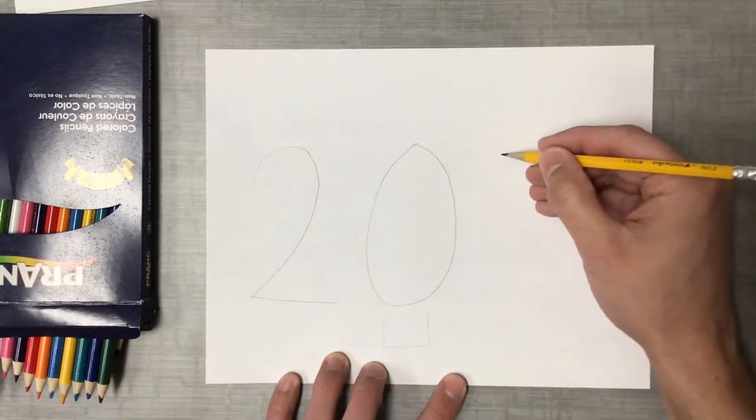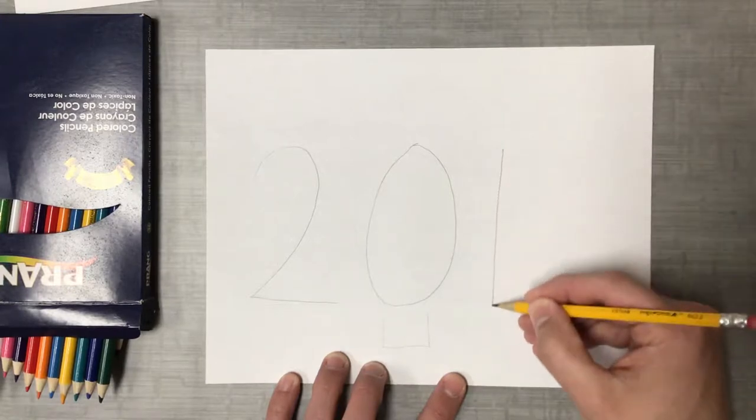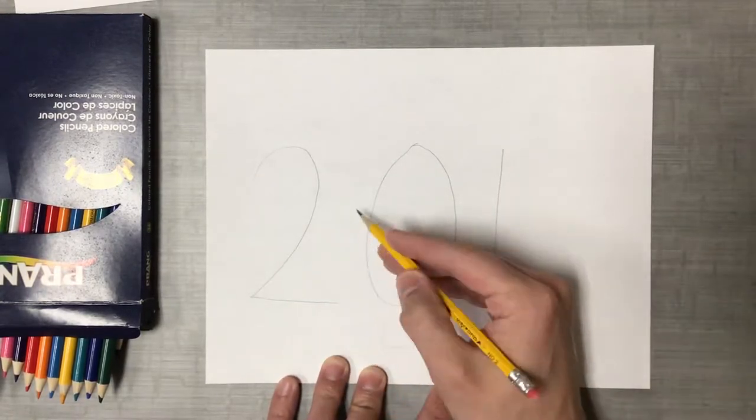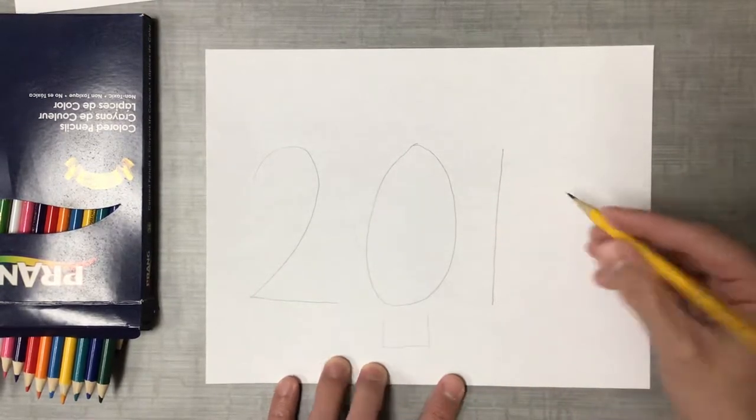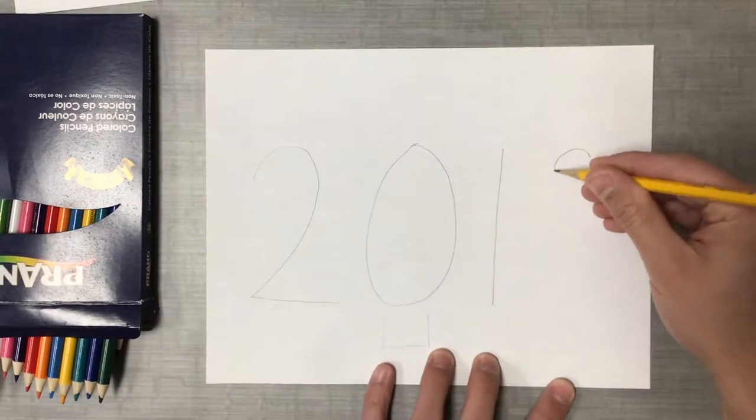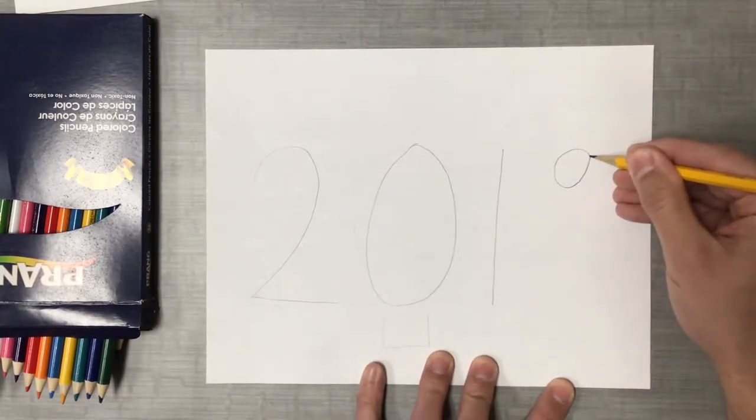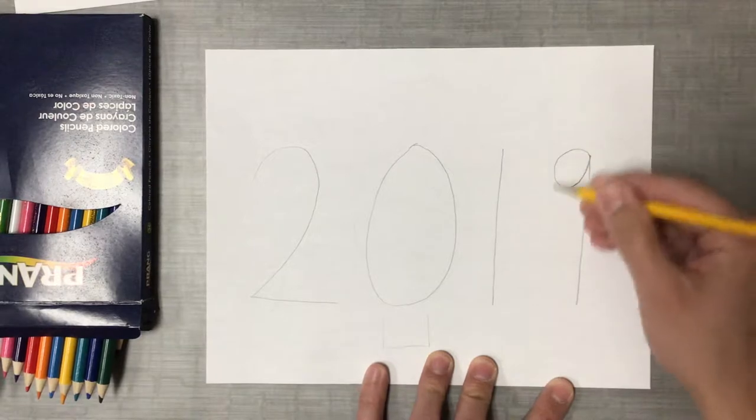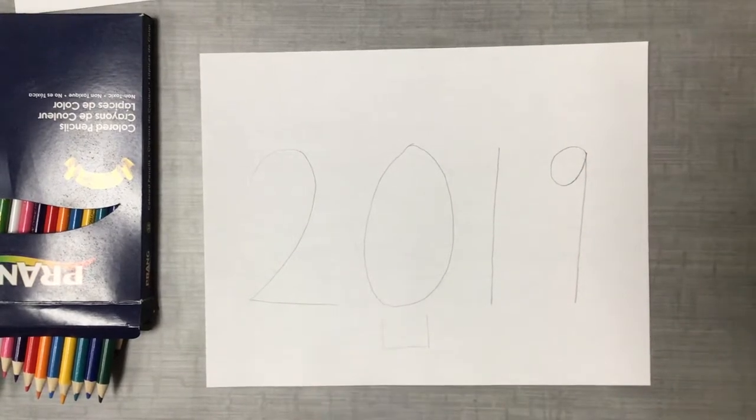And then I'm going to do a 1, and notice how large I'm doing it and how I'm leaving space in between each number. And then a 9. And I probably made that top part too small but it's okay because I'm drawing lightly.